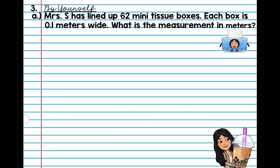So, let's go ahead and try these word problems by yourself. So, I'm going to read the first one for you. Mrs. S has lined up 62 mini tissue boxes. Each box is 0.1 meters wide. What is the measurement in meters? So, all you have to do is we know that if one is 0.1, we just have to multiply that by 62. So, go ahead and do that by yourself. 62 times 0.1. Okay, so our answer is 6.2 meters. The line is 6.2 meters long.